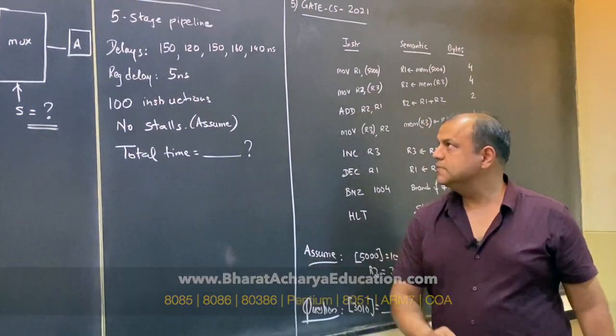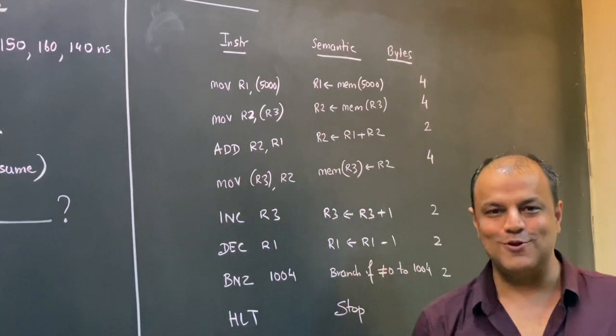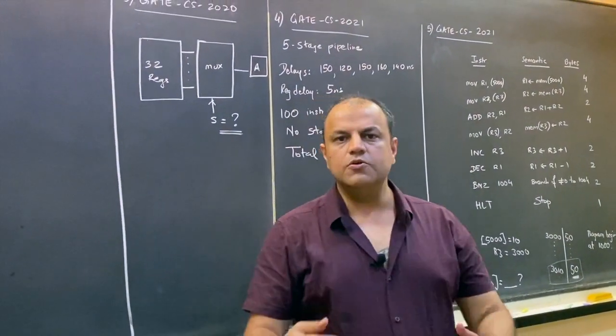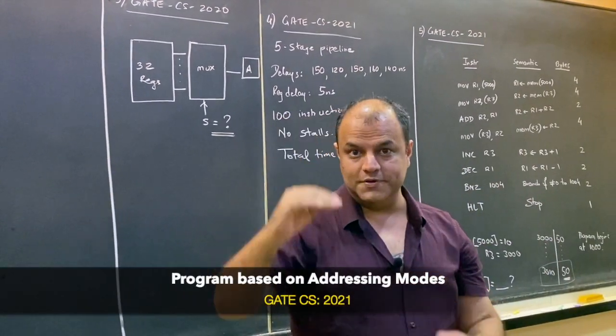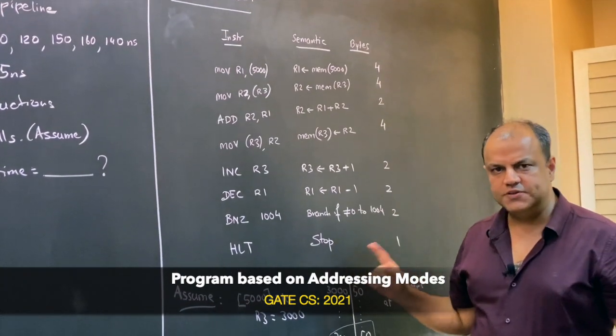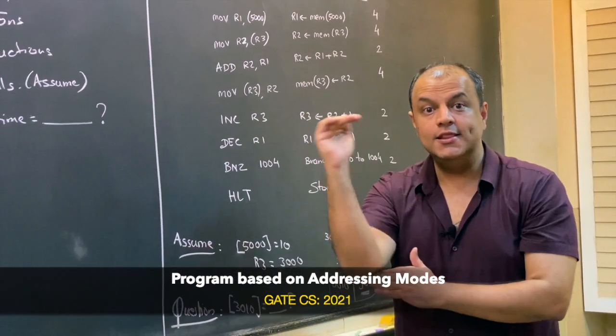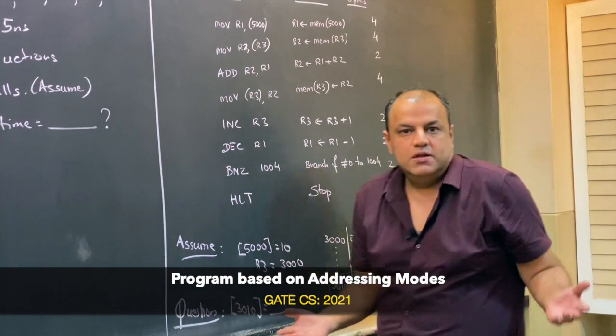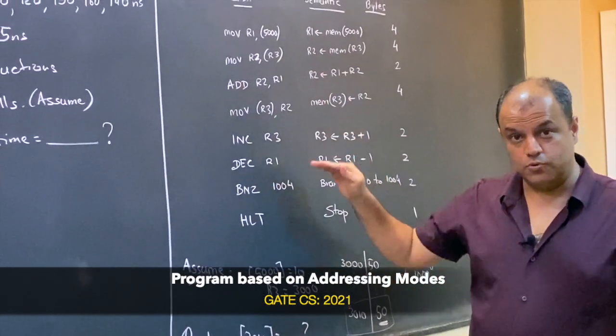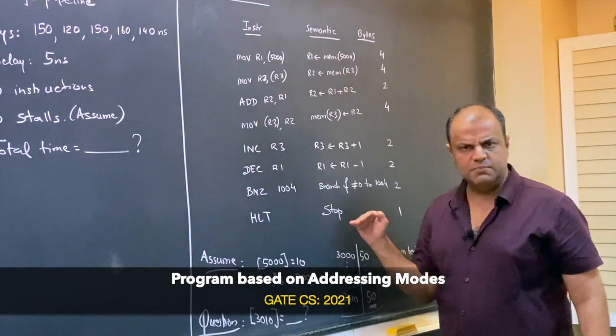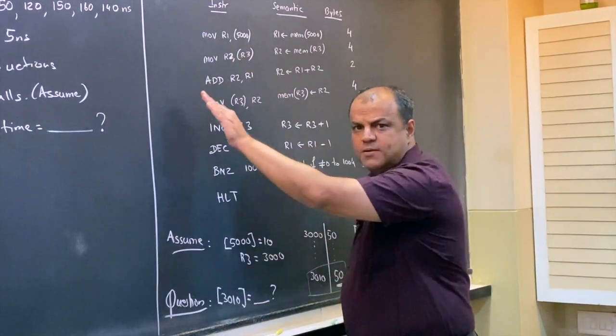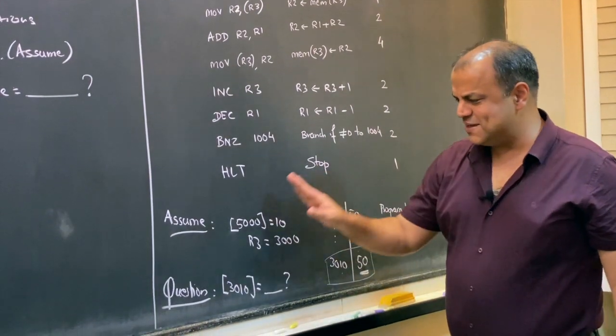This one is the cream of this whole lot. In every paper, they keep three or four questions way above the rest—this separates the average from the toppers. If you're aiming to score really high, you should be able to solve these. This question took one full page. Average students would say why waste 10 minutes, but prepared students can solve it in two to three minutes. They gave a full program, explained every instruction, gave the size of every instruction, the starting address, and data stored at several registers and memory locations.